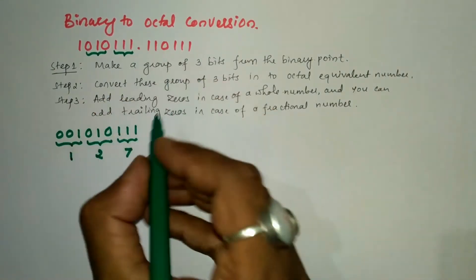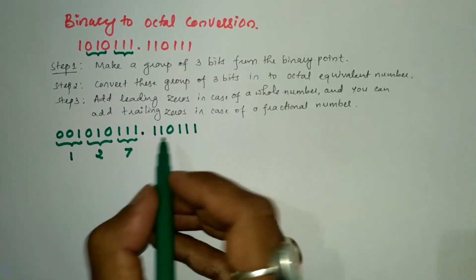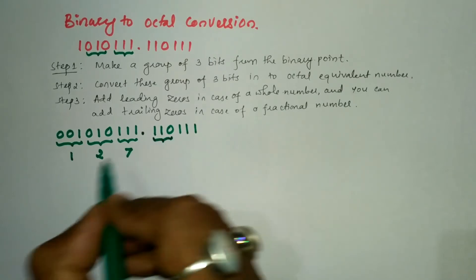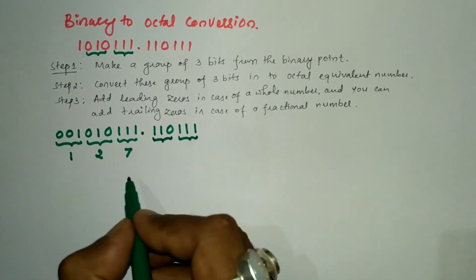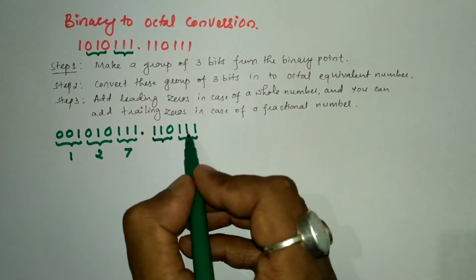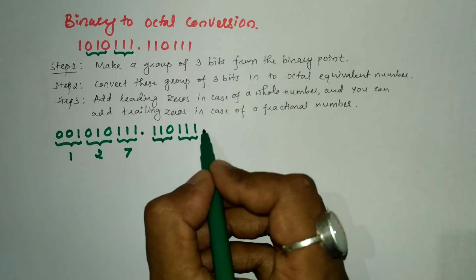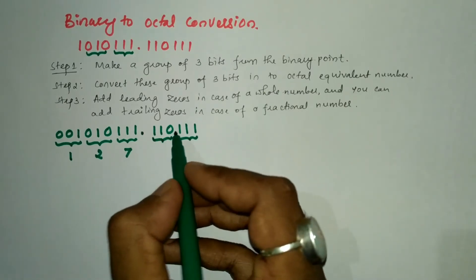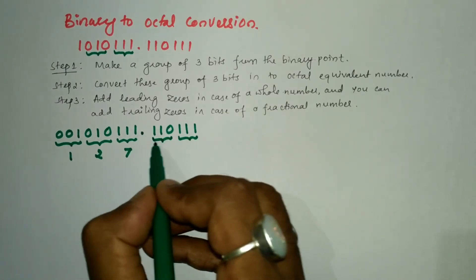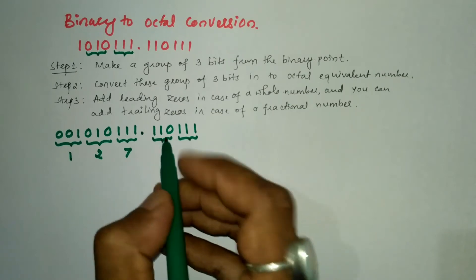Now, after the decimal point we have 1, 1, 0, 1, 1, 1. After the binary point, we make a group of 3 bits from the left-hand side. So we group the first three bits and the next three bits. In this example, we have 6 binary digits after the binary point, so we can make two groups of 3 bits each. No trailing zeros are needed here.